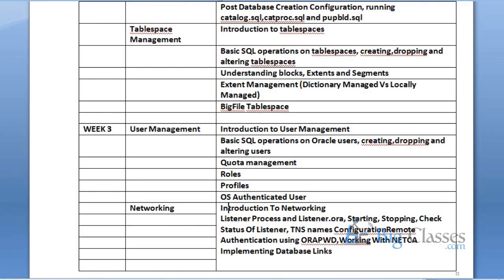Networking is again important because whenever you want to communicate with an Oracle database, you need some form of networking between client and server. There is a process called listener that comes into picture, and we will see how to configure this listener. The listener is the process which authenticates incoming connections — whenever a user tries to connect to Oracle, the request goes to the listener. The listener checks the username and password in the Oracle data dictionary, verifies whether the user exists and whether the password is correct, and if everything is okay, the session is created with the client. We will see how to configure, start, stop, and check the status of the listener, and TNS names configuration, which is client-side configuration.